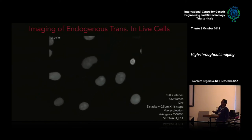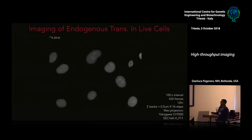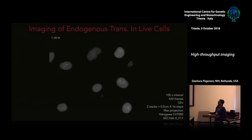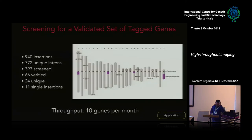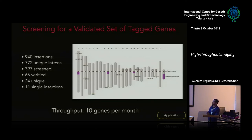Ian used FACS cell sorting to single-cell sort cells into a 96-well plate, then used the CV7000 to perform a colony screen, used next-generation sequencing to precisely identify the integration site, and then performed in-depth high-throughput imaging characterization. She started with 940 insertions in a heterogeneous pool, of which 772 were in introns by sequencing. She screened 400 colonies, verified 66 by both insertion sequencing and imaging, narrowed down to 24, and ended up with a validated set of 11 single insertion clones.